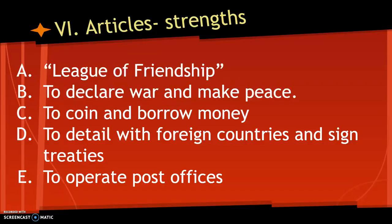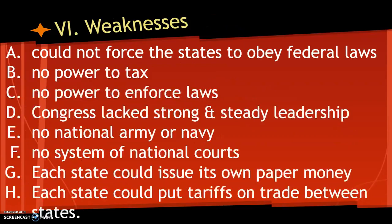The Articles of Confederation were really a league of friendship. The government had the ability to declare war and make peace, coin and borrow money, deal with foreign countries, sign treaties, and operate post offices. Those are the strengths.